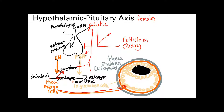Once estrogen reaches that certain threshold, it stimulates FSH and particularly LH, causing what's called an LH surge. The LH surge occurs because estrogen at a high enough level actually turns and activates LH and FSH secretion. We'll talk about why the LH surge is important a little bit later. That's it for the hypothalamic-pituitary axis.